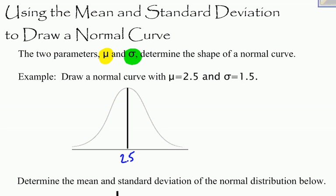Now we should also know that if I were to go one standard deviation above the mean, and one standard deviation below the mean, I am at a point on the curve called a point of inflection.